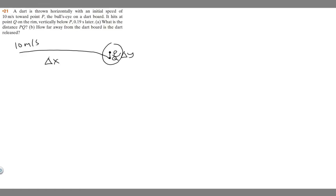In this problem, we're told a dart is thrown horizontally with an initial speed of 10 meters per second towards point P, the bullseye on the dartboard. It hits at point Q on the rim, vertically below P, 0.19 seconds later. Part A asks what is the distance PQ, and Part B asks how far away from the dartboard is the dart released.